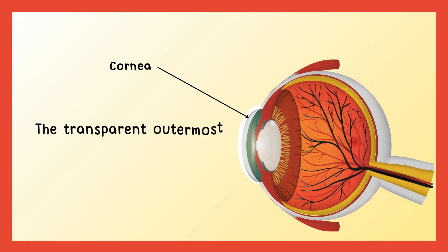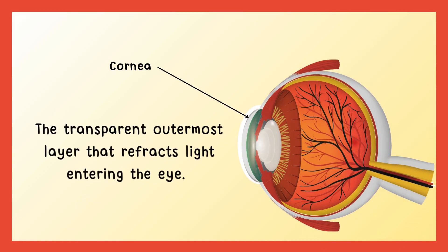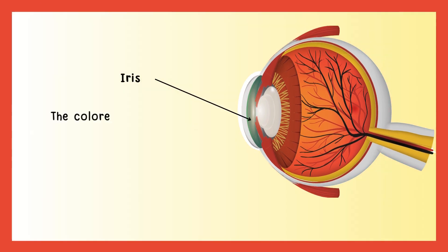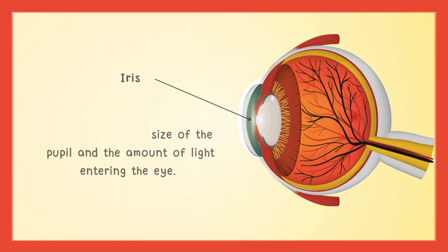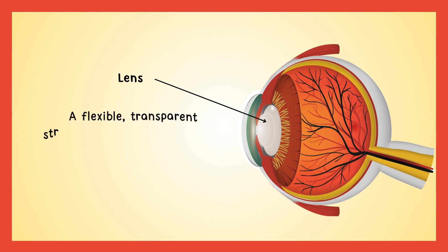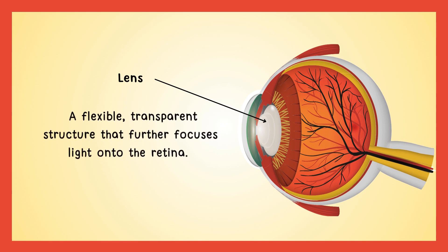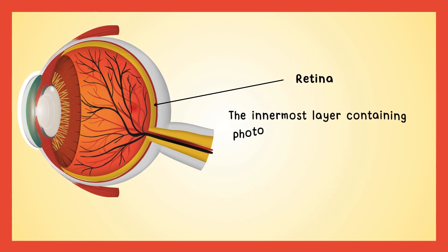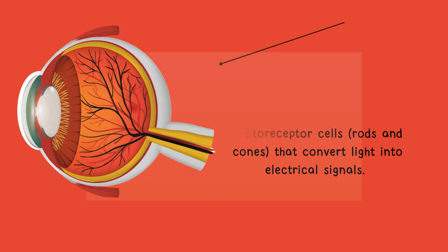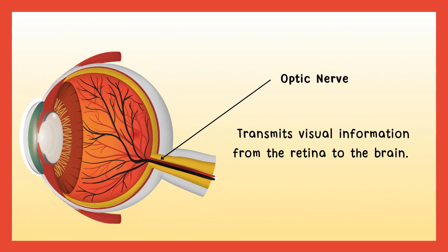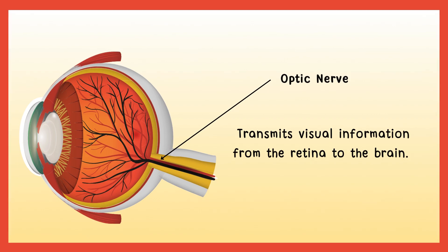Key components: Cornea — the transparent outermost layer that refracts light entering the eye. Iris — the colored part of the eye that controls the size of the pupil and the amount of light entering the eye. Lens — a flexible, transparent structure that further focuses light onto the retina. Retina — the innermost layer containing photoreceptor cells, rods and cones, that convert light into electrical signals.